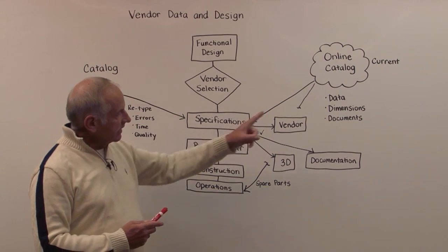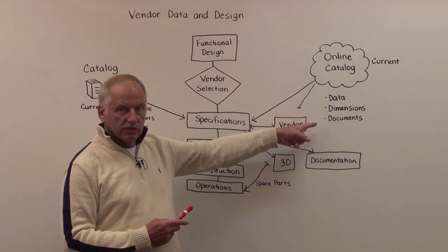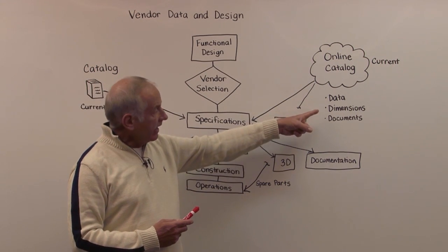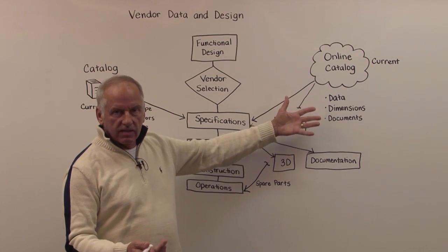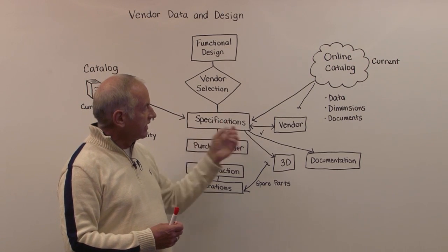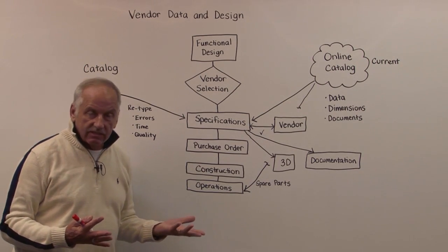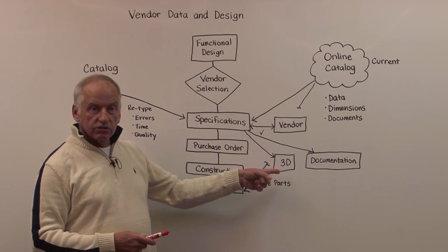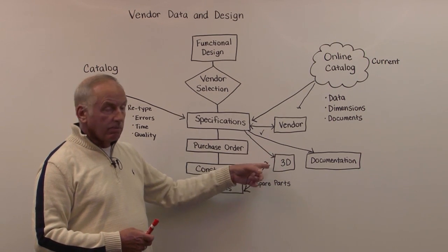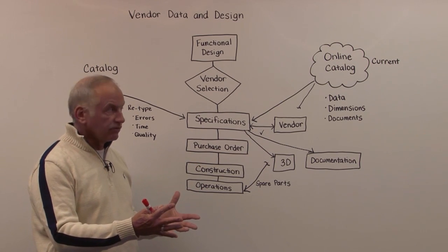Not only does data come through, but we can add more information with this model rather than a picture catalog. We can convey dimensions — for instance, if you have an instrument, its dimensions can also come into the design along with associated documents. We can feed these dimensions to the 3D model and give them to our piping colleagues, who can immediately place the components, automatically creating them in the 3D model based on the vendor dimensions.